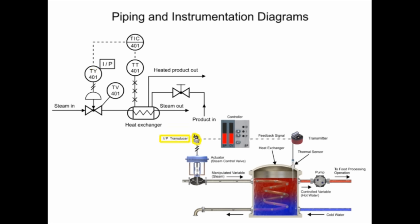The transducer converts an electronic signal to a pressure signal and is indicated by the square containing the letters I and P. The line with diagonal marks designates a pneumatic connection.